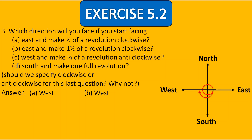In C, we are facing west and make three fourths of a revolution anticlockwise. Moving anticlockwise, we reach north. The answer for C is north. In D, we start facing south and make one full revolution. We reach south again. Whether we go clockwise or anticlockwise, after one full revolution we return to south. The answer for D is south.